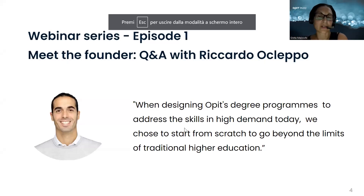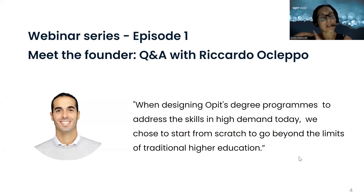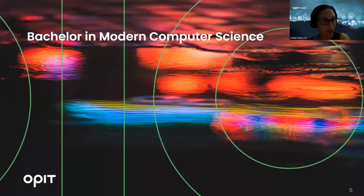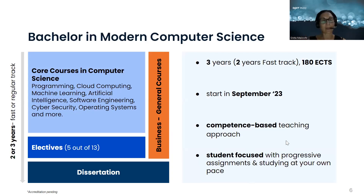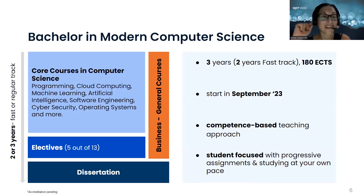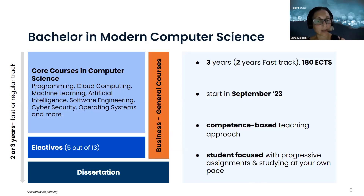I'm just going to briefly continue the presentation. As Ricardo said, we wanted to start from scratch to go beyond the limits of traditional higher education. We started with two programs: the Bachelor in Modern Computer Science and the Master in Data Science and Artificial Intelligence. A few words about the Bachelor: it's designed over three years, but you can actually do it in two years with our fast track option. By sacrificing a little bit of your summer, you can finish early in both programs. We will start on the 25th of September 2023. It's a competency-based teaching approach, very focused on students with progressive assignments.